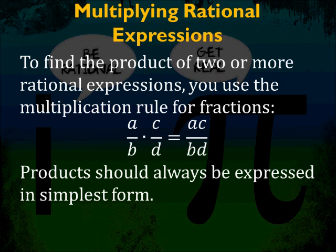The product of two or more rational expressions is the same as multiplying two fractions together. If you have a over b times c over d, you get a times c over b times d. Products should always be expressed in simplest form — cancel out any common factors that appear on the top and the bottom of a fraction, reduce all fractions, get rid of common terms, and reduce numerical coefficients to simplest form as well.